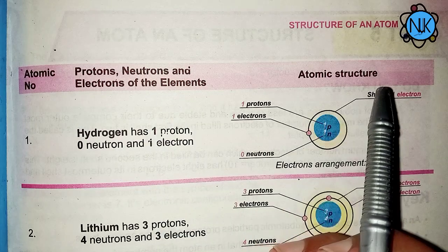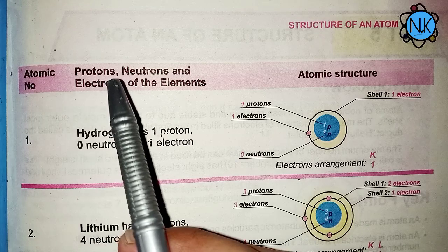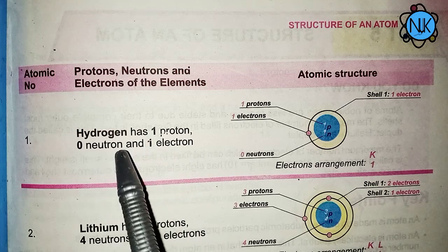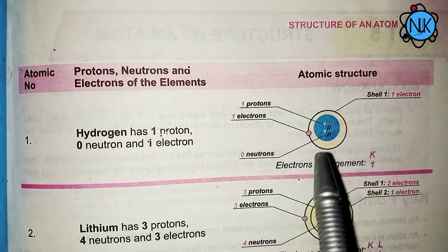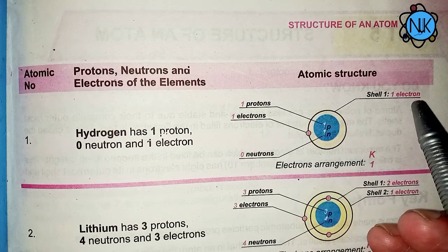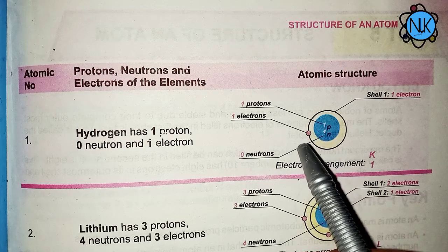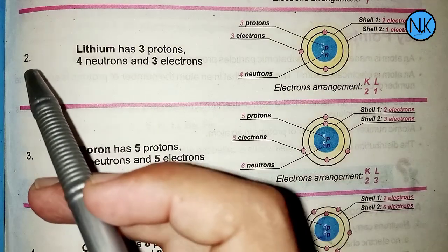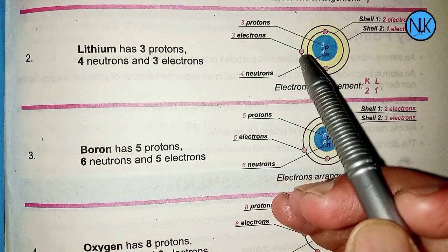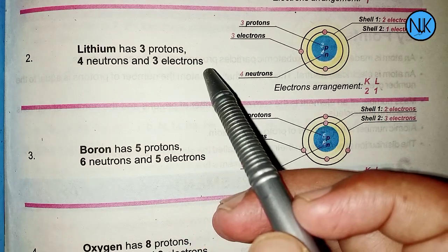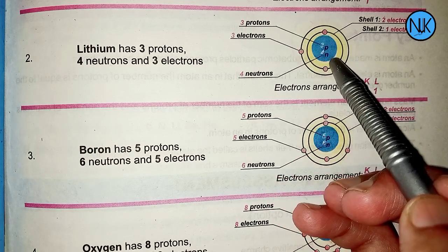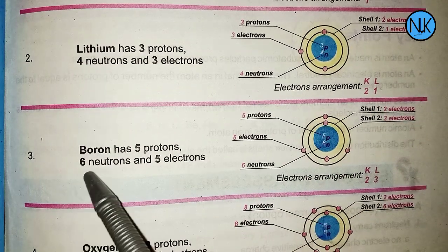Hydrogen has one proton and zero neutrons, giving it one electron in its atomic structure. Lithium has three protons, and its electrons are distributed in the K and L shells.